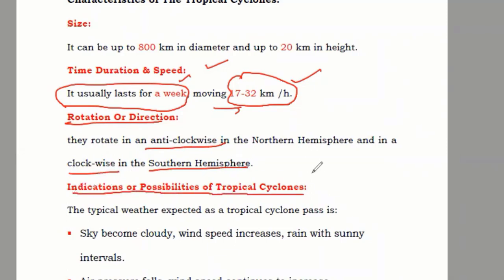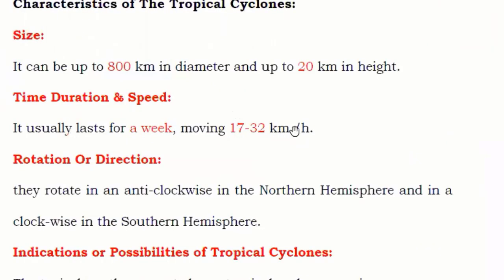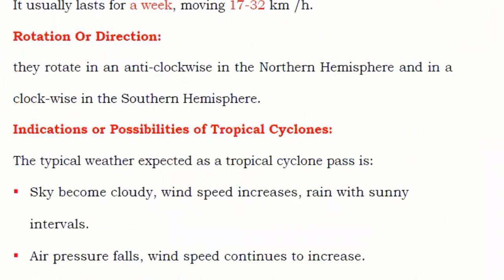Now they're talking about indications or possibilities of tropical cyclones. An indication means: is there any way or method that people will know a cyclone is going to happen? The meteorology department — the weather department that forecasts weather — uses these signs to decide there is a possibility of a tropical cyclone. They can issue an alert before the cyclone comes to a specific area, so people can move to a safer place.